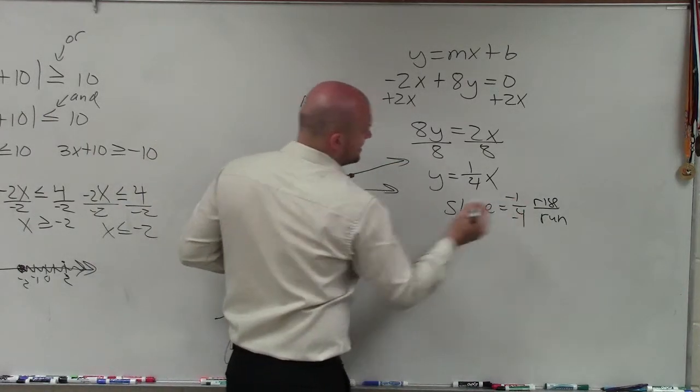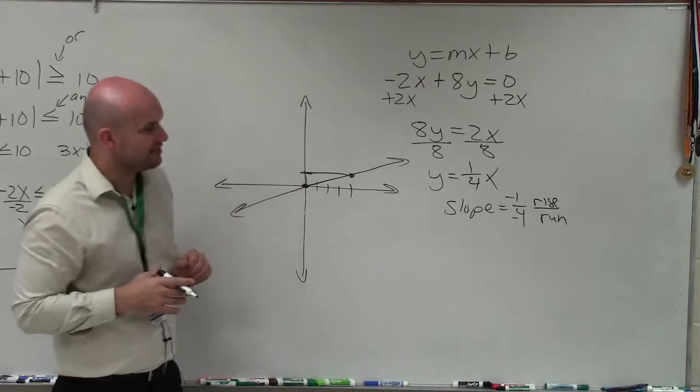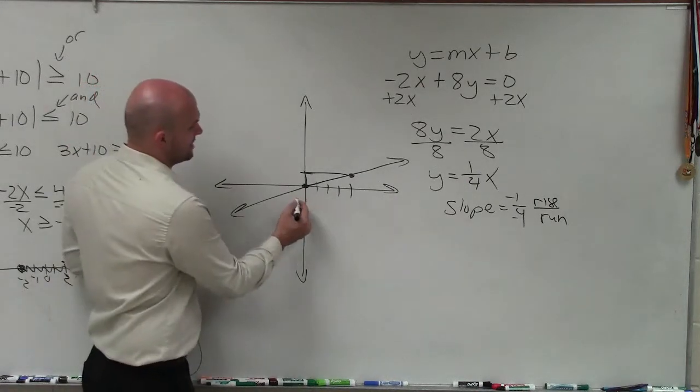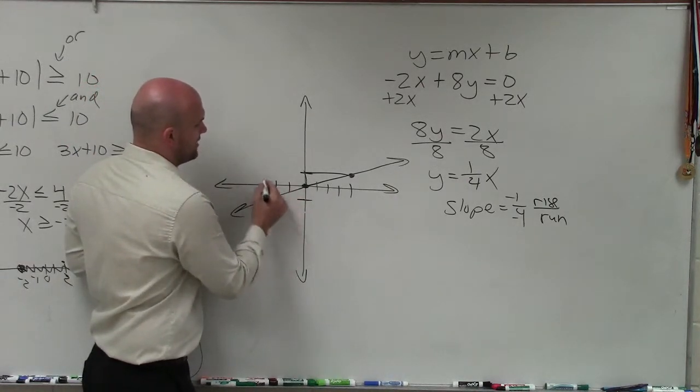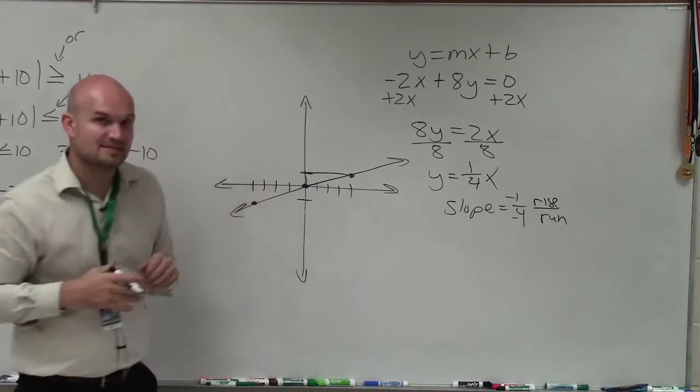Positive 1/4 is the same as negative 1 divided by negative 4, which means I could also go down 1 and to the left 4, and I'd still remain on my same line.